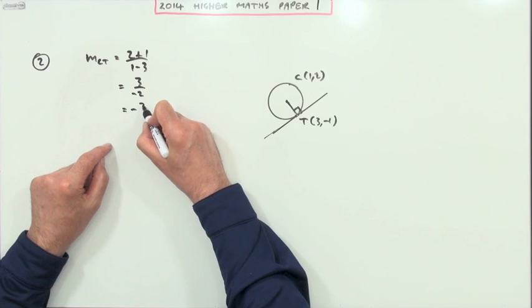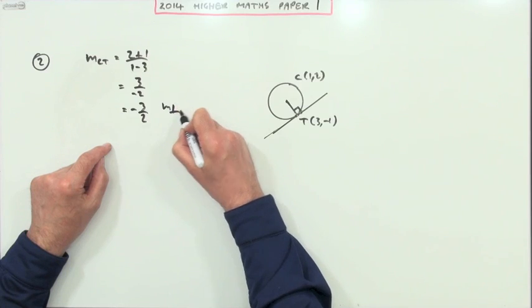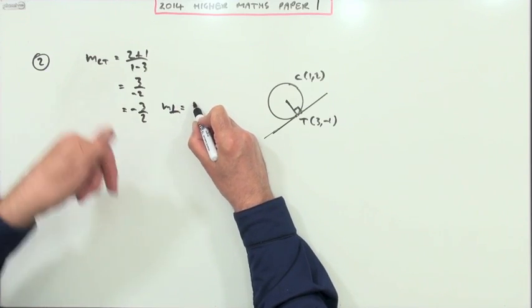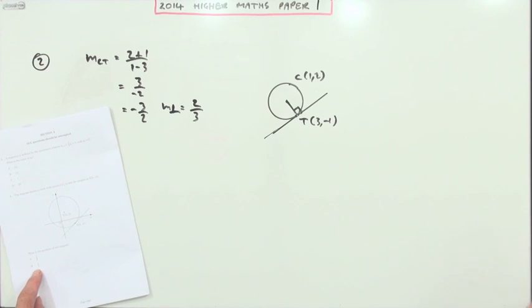Which means that the perpendicular gradient will be the negative of the reciprocal: 2 thirds. And 2 thirds is answer B.